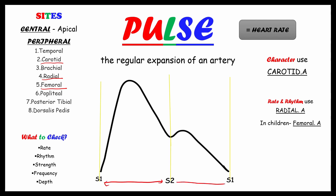As you all know, the gap between S1 and S2 is the systolic phase, and the gap between S2 and S1 is the diastolic phase. In the systolic phase, ventricular ejection happens — this is the systolic peak pressure. This is the dicrotic notch, which I will explain later. Don't confuse pulse pressure with blood pressure; both are different.